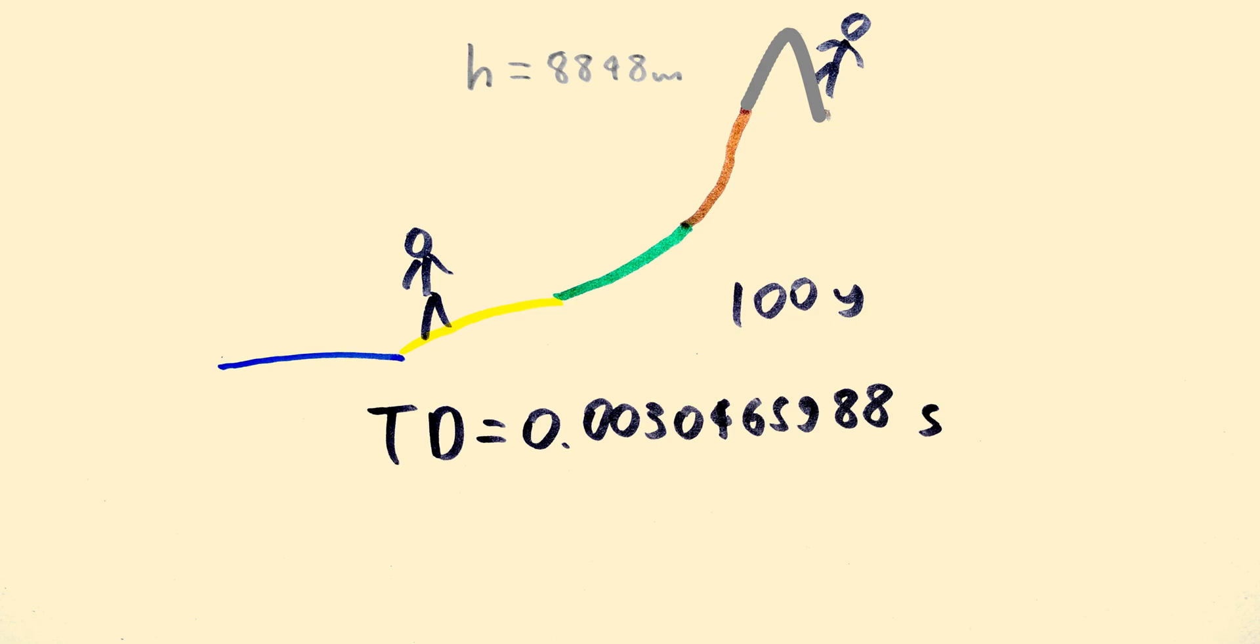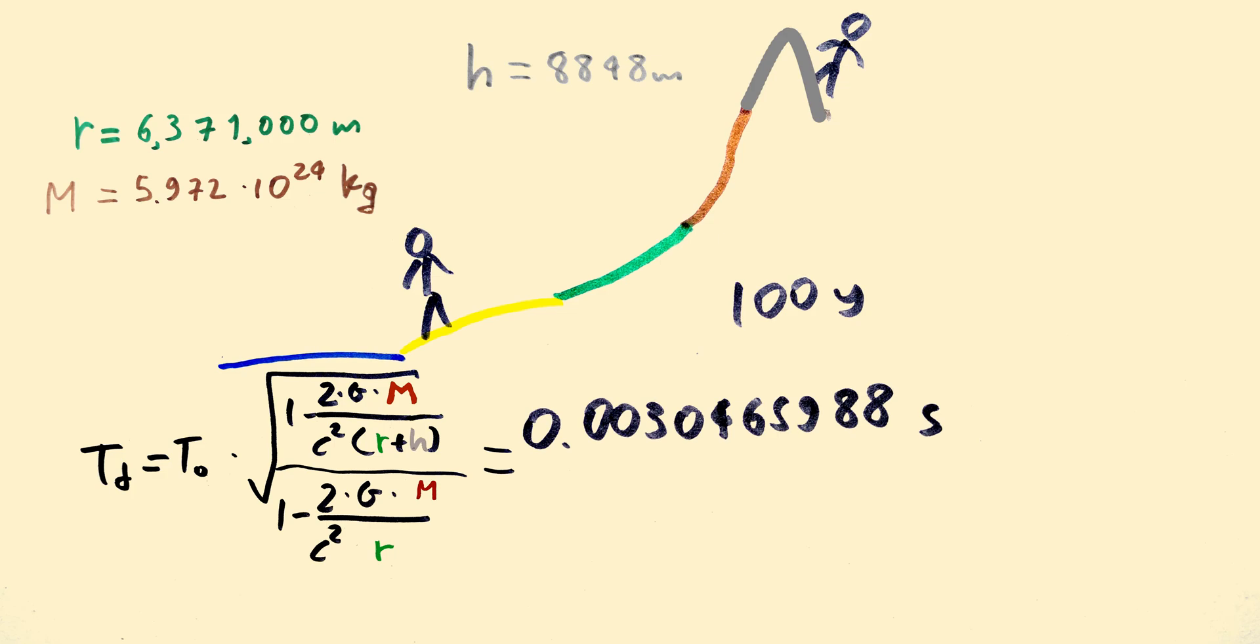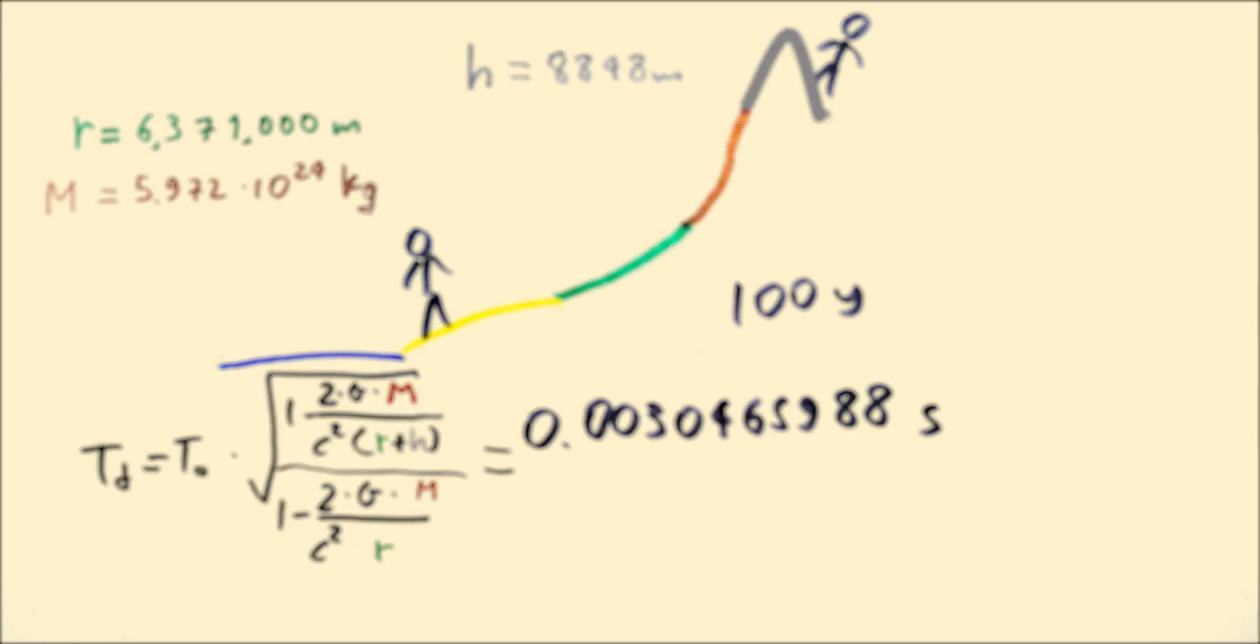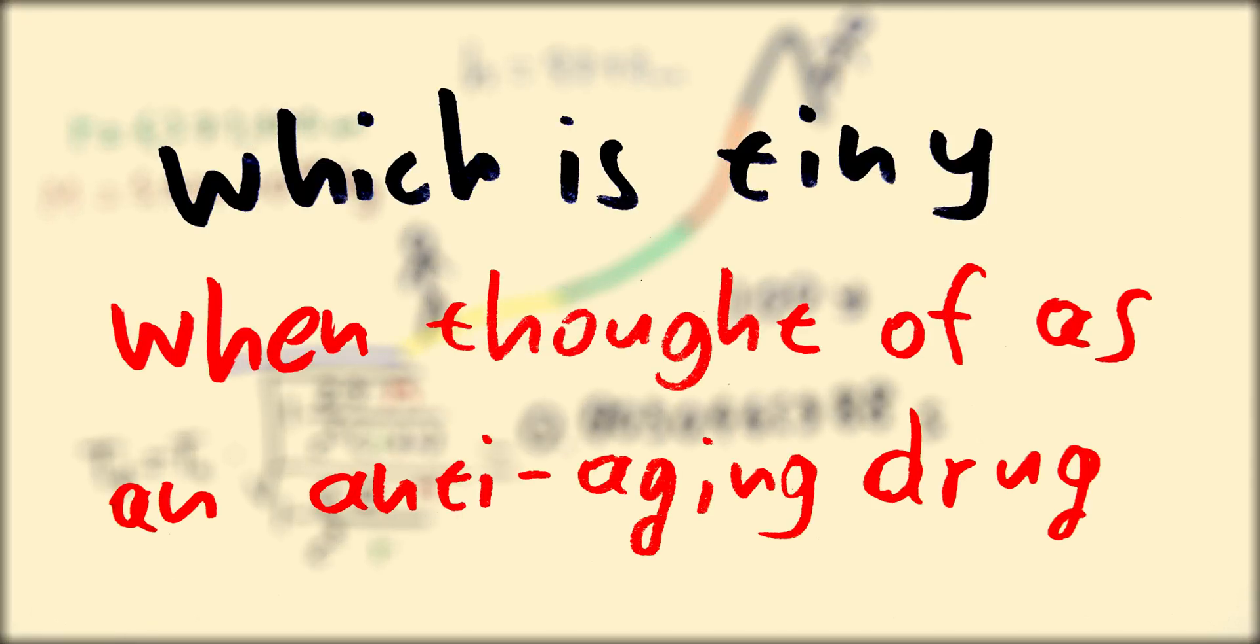Here's how to calculate it. You would need the distance between the two objects, the distance of the surface of the earth to its center of mass, and the mass of the earth. When the height difference between the two objects are close enough, so there is no significant difference in gravitational acceleration, the time dilation can be calculated like this. So applying this to the above case results in this many seconds, which is tiny when thought of as an anti-aging drug. But even this small difference is responsible for the color change.